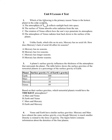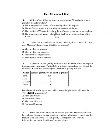Number 1. Which of the following is the primary reason Venus is the hottest planet in the solar system? A. The atmosphere of Venus reflects sunlight back into space. B. The surface of Venus absorbs solar radiation from the sun. C. The rotation of Venus affects how the sun's rays penetrate its atmosphere. D. The atmosphere of Venus radiates heat back down to the surface of the planet.